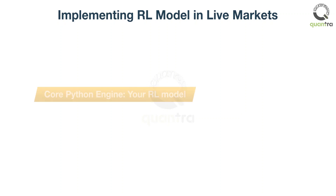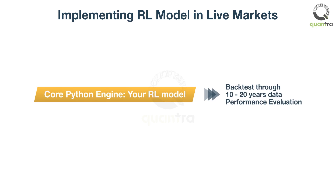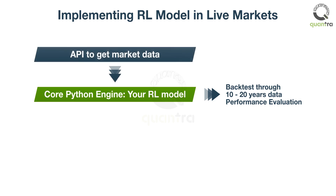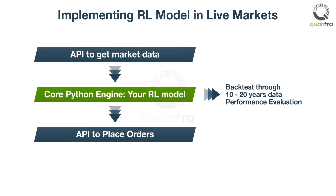First, we create a Python core engine, which is the RL model. We sequentially and continuously run it through 10 to 20 years of data and evaluate the performance of the model. If it works well and we don't need to improve it further, we use the core engine as it is and plug the market data and signals through the broker's API, starting with paper trading followed by live trading.